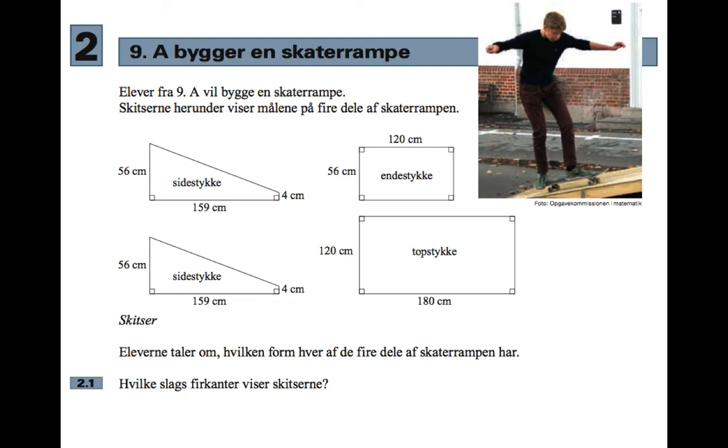It says pupils from 9A want to build a skater ramp. The sketches below show measurements from four parts of the skate ramp. The pupils are discussing what form each of the four parts of the skater ramp have. What kind of quadrilaterals do the sketches show?